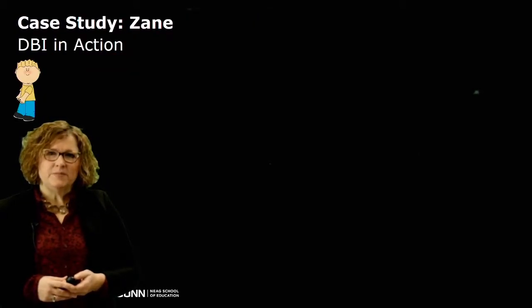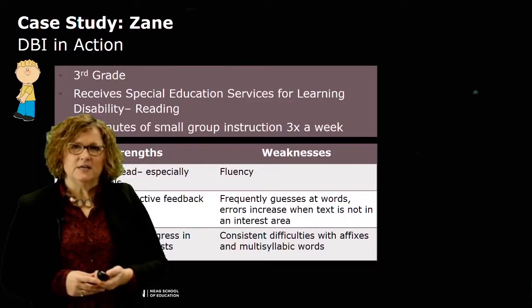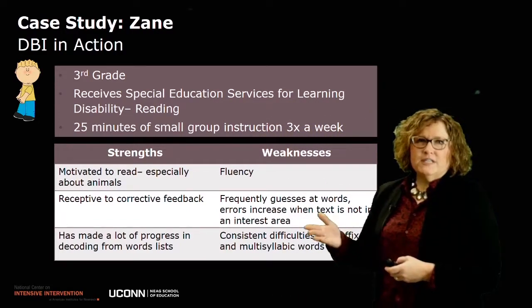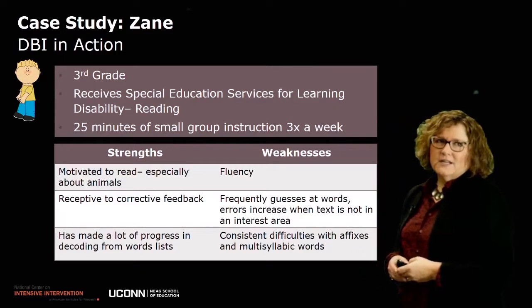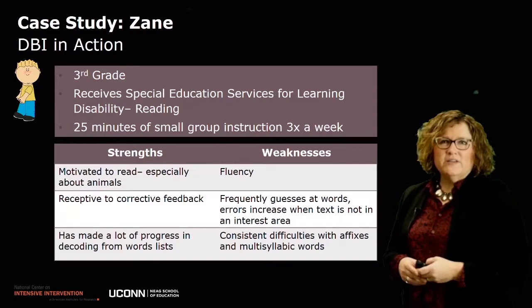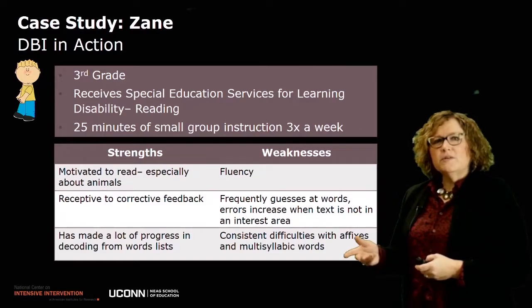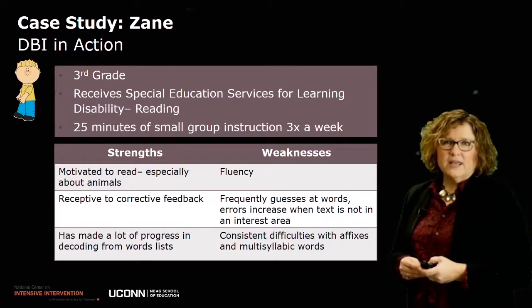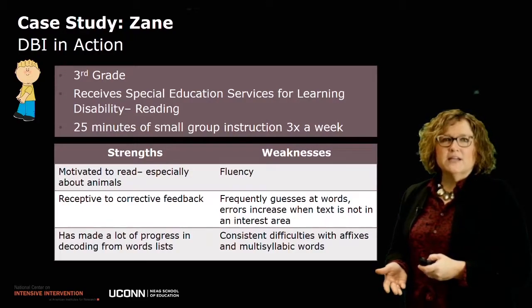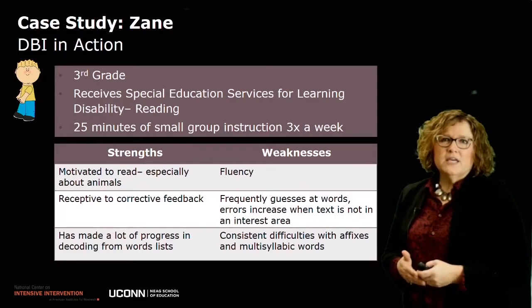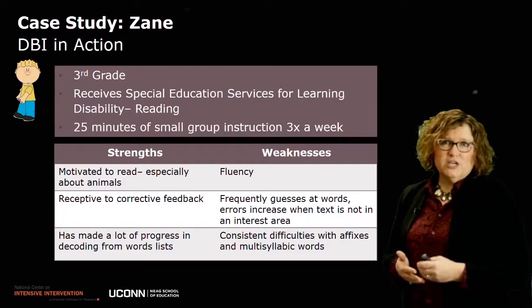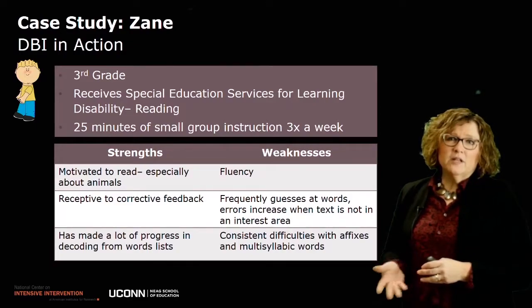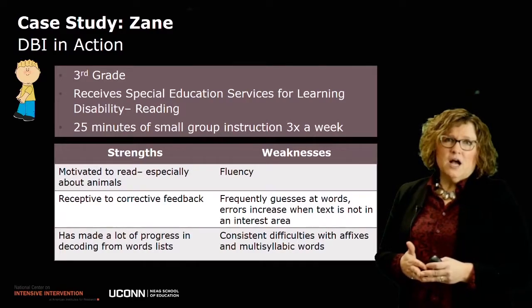Now let's look at a case study of what DBI might look like in action — the case of Zane. Zane is a third grade student in special education who receives services as a child identified with a learning disability. He gets 25 minutes of small group instruction three times a week. Some of Zane's strengths: he's motivated to read and especially likes reading about animals. He's receptive to corrective feedback, and when the teacher provides specific corrective feedback, he takes those suggestions and makes changes to his reading. He's made a lot of progress in decoding from word lists.